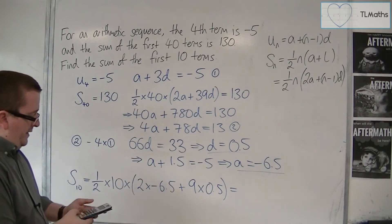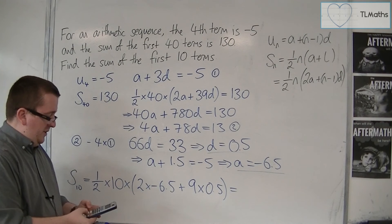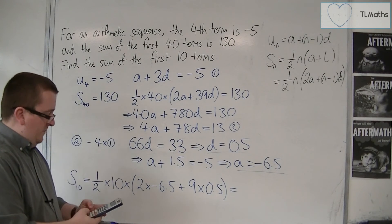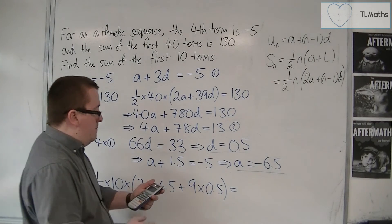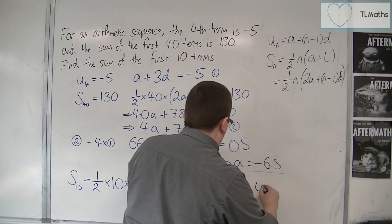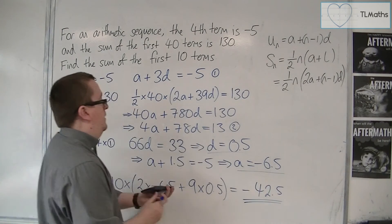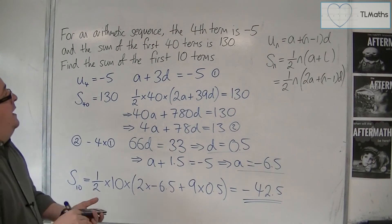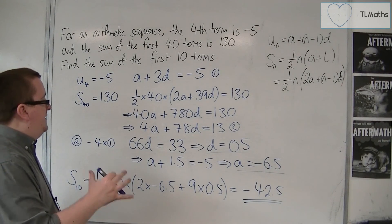So pop that into the calculator. 1 half times 10, times 2 lots of minus 6.5, plus 9 lots of 0.5, gets me minus 85 over 2, so minus 42.5. And that is the sum of the first 10 terms.